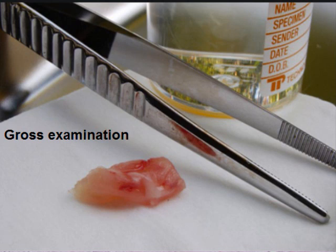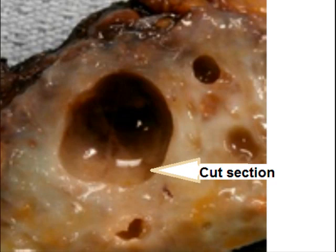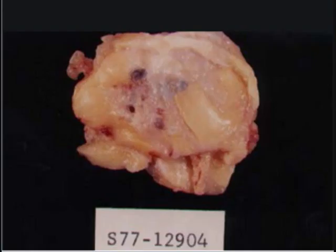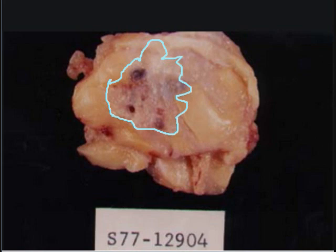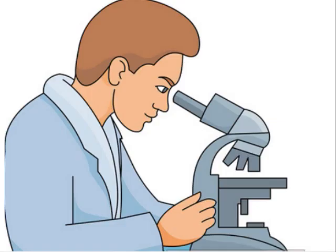An excision biopsy was advised and the specimen was sent to the lab. After careful examination, a cyst was visible in the biopsy specimen. The cut section showed it was filled with brown fluid. Some specimens may show an ill-defined mass, and there were multiple small cysts in the biopsy specimen. Slides were then prepared for microscopic examination.